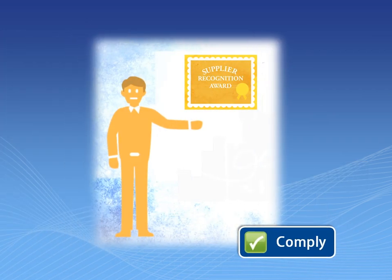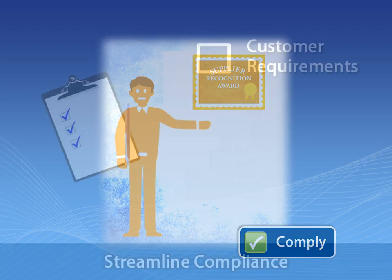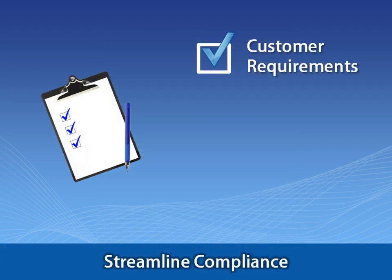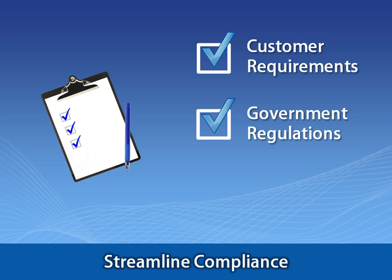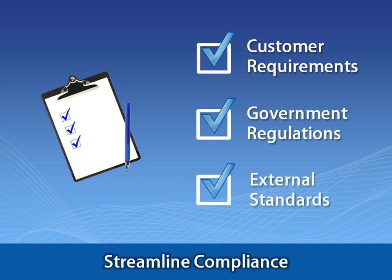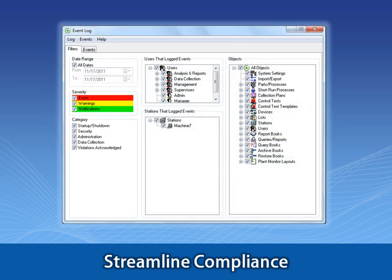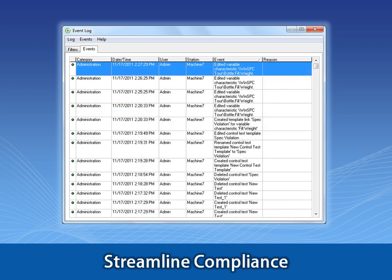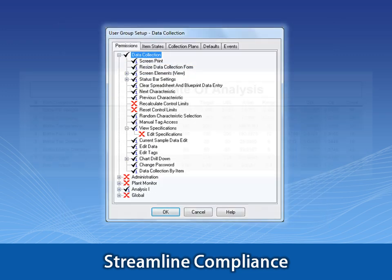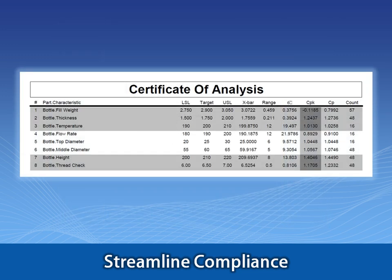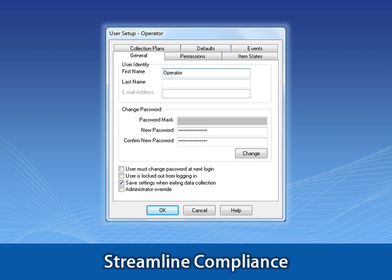Complying means satisfying customer requirements like the testing and reporting of critical characteristics, government regulations such as those from the FDA, and external standards from bodies such as ISO. You can count on WinSPC's audit trail, event log, user permissions, summary reports, and password management to automate many of your compliance tasks.